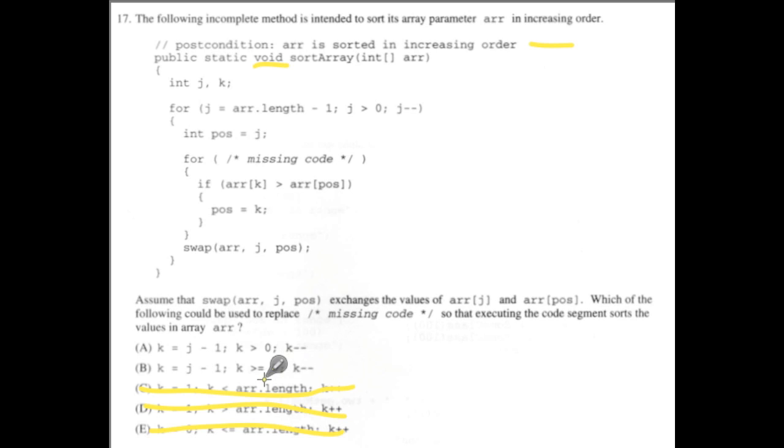So really the only difference between these is this. And the key here is that we have to look at the zero position, right? Because if we don't look at the zero position, we're leaving an element out. We're not looking at an element if we don't go down to the zero position. So that eliminates that one. So the correct answer is B.